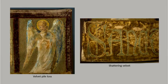Silk velvet is a particular issue, as both the woven ground and the looped pile deteriorate. Loss of the pile can lead to exposed ground fabric, which may or may not be the same color. Breakage in the ground will result in fabric loss, and in either case, embrittlement of the fibers causes breakage, resulting in silk dust.